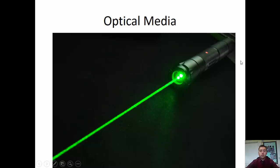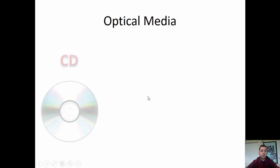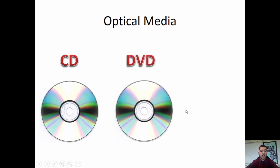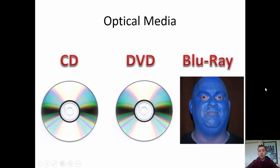Optical storage means it is read by using a laser, and it's on a disc. The types of discs are: CD, which tends to have software, music, or files for transferring between computers; DVD, used for standard definition films, games, or software; and Blu-ray, which is used for high definition films.